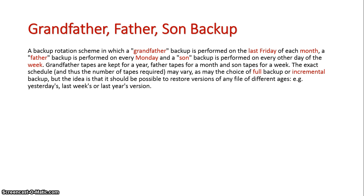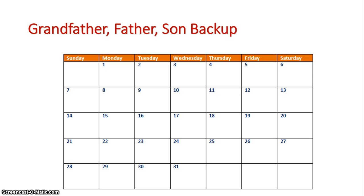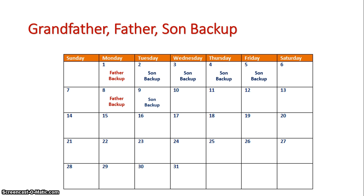So if we're going to look at this graphically, on the first day of the month, the first Monday, I might have my first father backup of the previous week, and then the days following I might just conduct son backups to follow in everything. The weeks after would be exactly the same — another father backup on the first Monday followed by son backups — and this would continue on for the rest of the month.